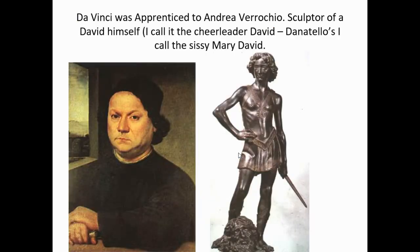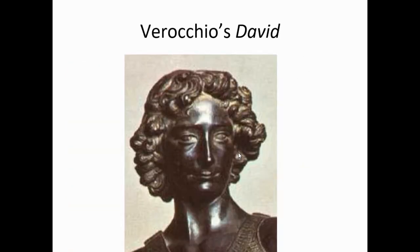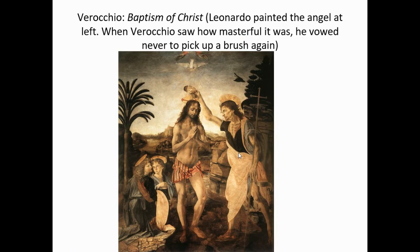Da Vinci was apprenticed to Andrea Verrocchio, sculptor of a David himself — I like to call it the cheerleader David because he just looks like a 1970s cheerleader. There are four Davids worth knowing for Quiz Bowl: Donatello's effeminate one, Verrocchio's cheerleader, Michelangelo's, and Bernini's. There is a famous story about the Baptism of Christ — Leonardo was given the two little angels in the lower left to paint, as well as some background. Verrocchio was so overwhelmed by how much better Leonardo was than anyone else, including himself, that he vowed he would never pick up a brush again.